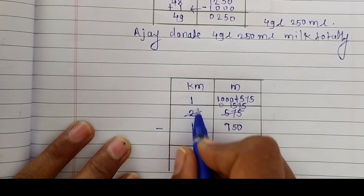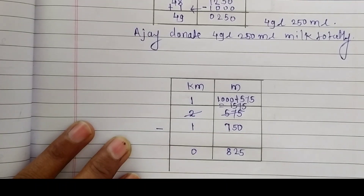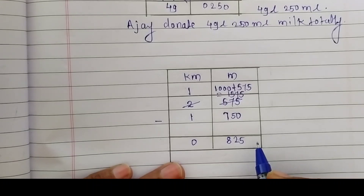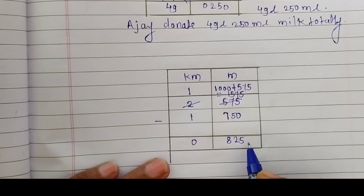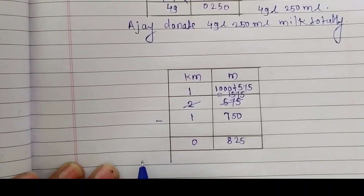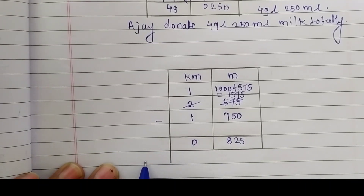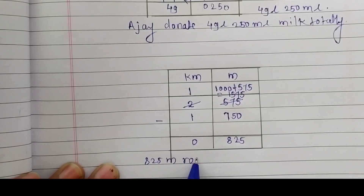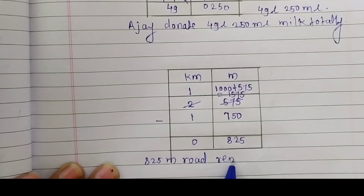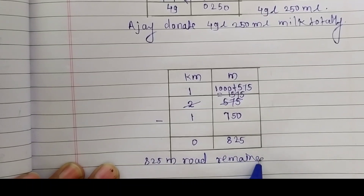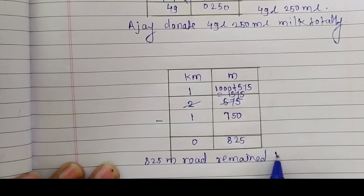Now subtracting: 1575 minus 750 equals 825 meters, and 1 minus 1 equals 0 kilometers. So 825 meters of road remain to be cleaned.